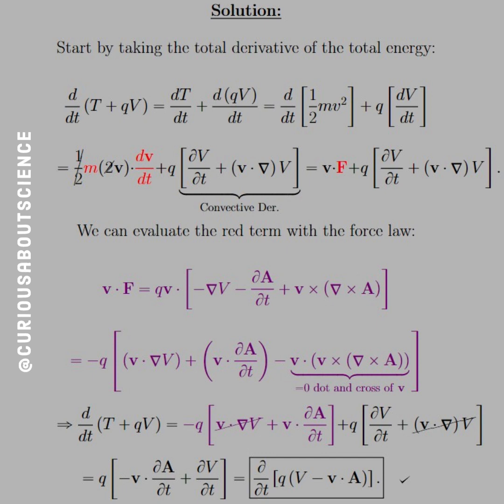And we are left exactly with what we wanted, d by dt of q times V minus v dot A. How cool is that? All from a geometric argument of the dot product. That is wonderful. I love using those cool, quirky tricks.